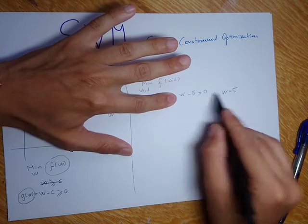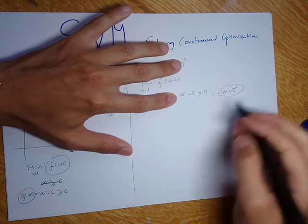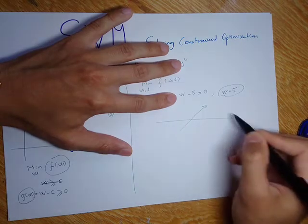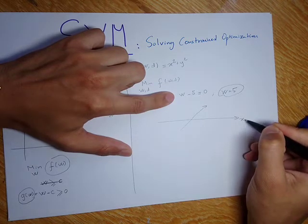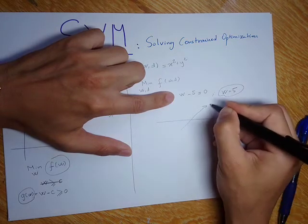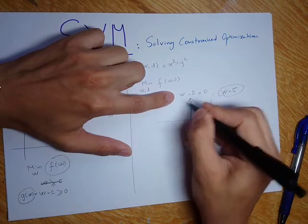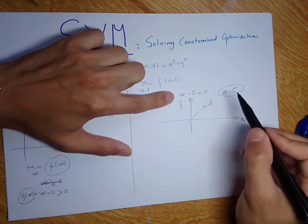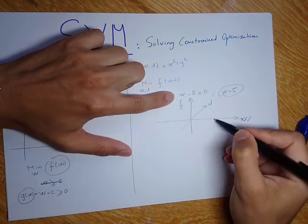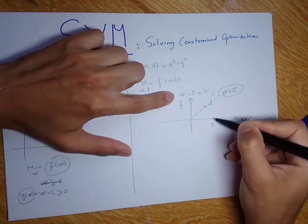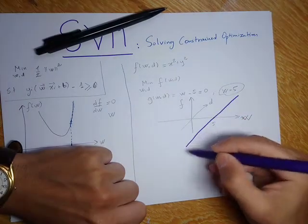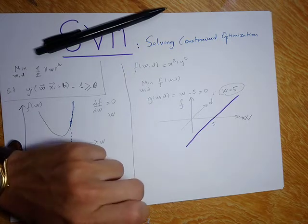So my constraint is W equal to 5. If I have this two-dimensional graph — with W on one axis, D on the other, and the function F — when I say I have a constraint W equal to 5, I want to find solutions only along the direction where W equals 5, and ignore everything else.